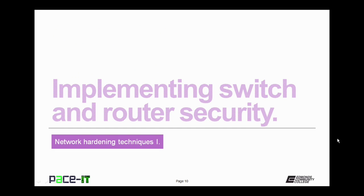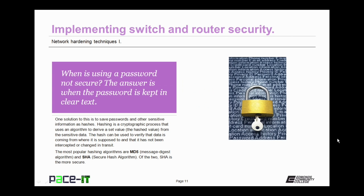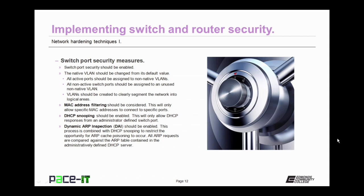Now let's talk about implementing switch and router security. When is using a password not secure? When the password is kept in clear text. One solution is to save passwords and other sensitive information as hashes. Hashing is a cryptographic process that uses an algorithm to derive a hashed value from sensitive data. The hash can verify data origin and that it has not been intercepted or changed in transit. The most popular hashing algorithms are MD5 and SHA — of the two, SHA is more secure, and the wise network administrator ensures all passwords and usernames are kept as hashed values.